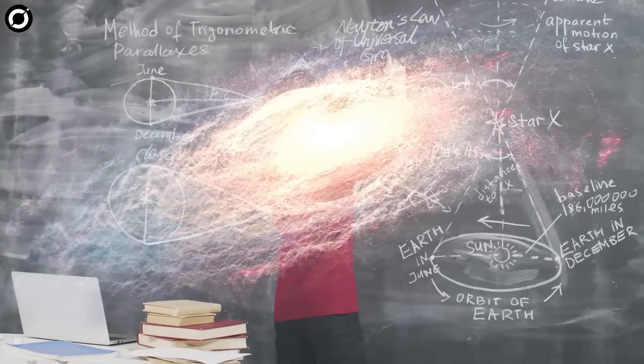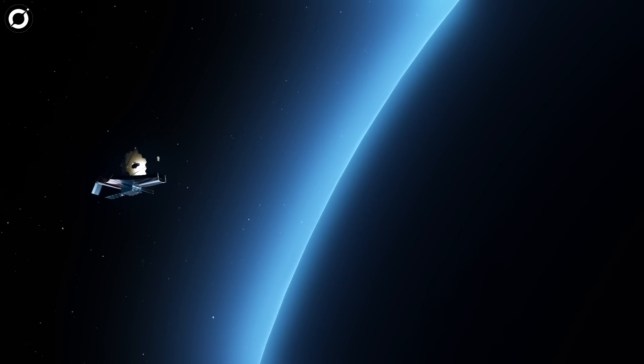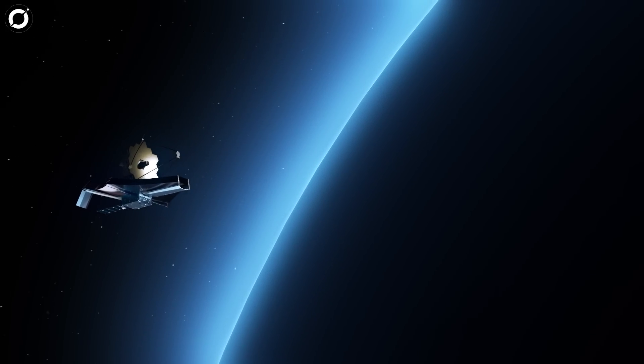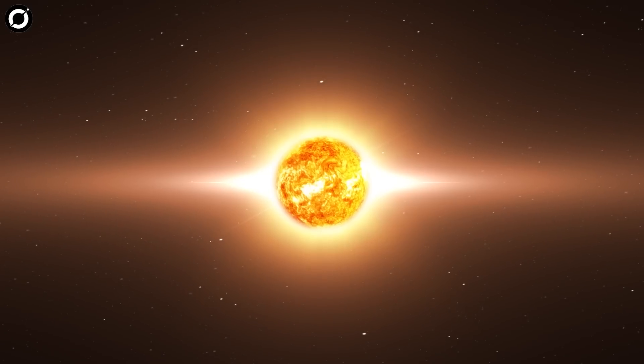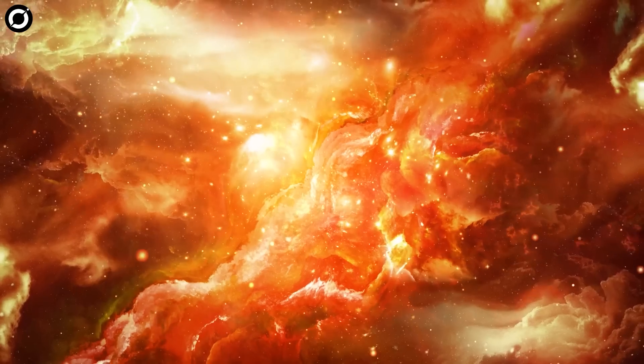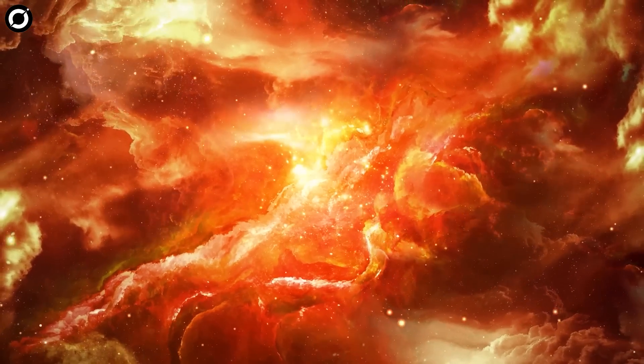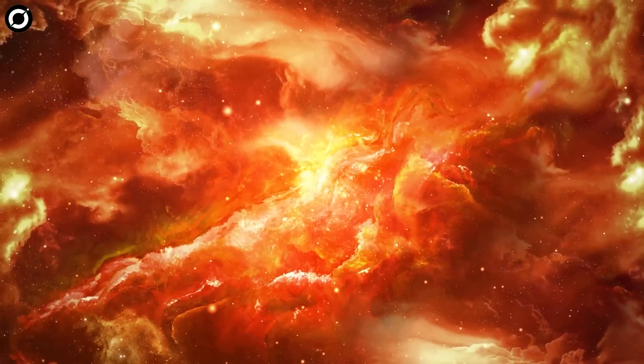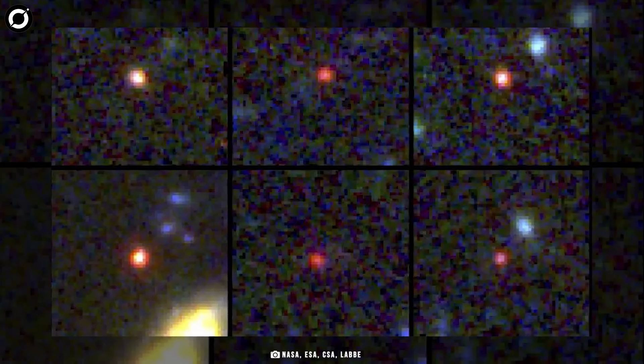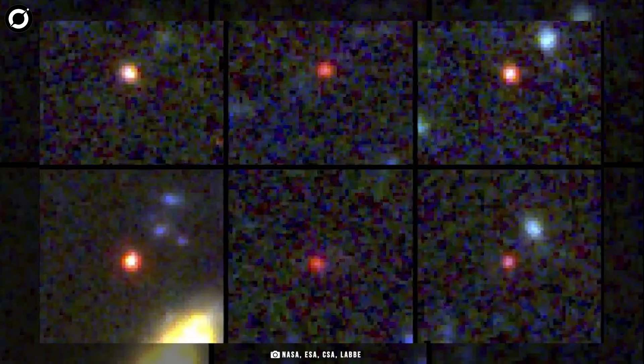Either way, it is a shocking discovery by James Webb yet again. The Milky Way forms about one to two new stars every year. These galaxies would have to be forming hundreds of new stars a year for the entire history of the universe. If even one of these galaxies is real, it will push against the limits of our understanding of cosmology.